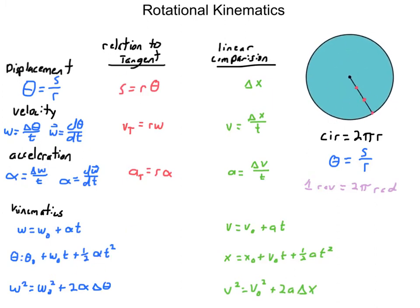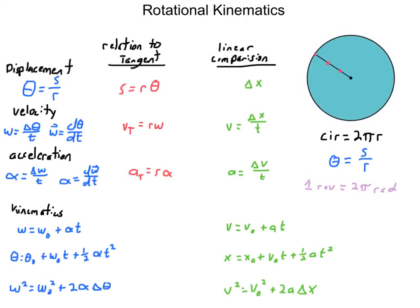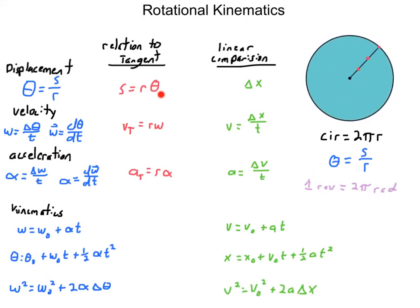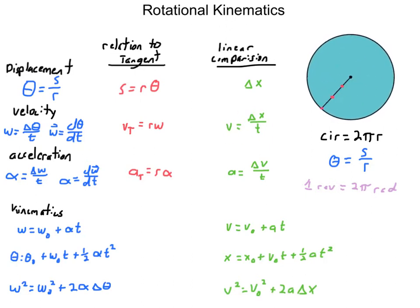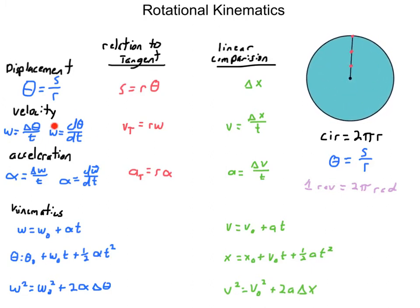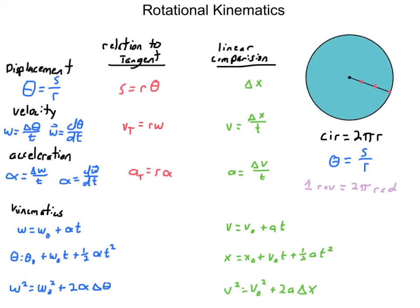All the equations you have are the same as the linear equations - just translated into angular form. The angle you pass through is the displacement divided by the radius. Your velocity - just like displacement divided by time - becomes angular velocity: change in angle divided by time, or the time derivative of an angle equation. This should lead your mind to thinking about motion graphs and taking the derivative of a theta equation to get angular velocity.